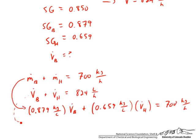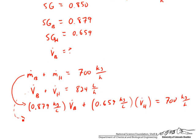I'm going to do another little trick. There are several ways that we can solve for this. One convenient thing to do is to multiply. We know we want to solve for the volumetric flow rate of benzene, so we want to eliminate the volumetric flow rate of hexane. I'll multiply this equation by 0.659. If I multiply this by 0.659, then 824 times 0.659 is 543.